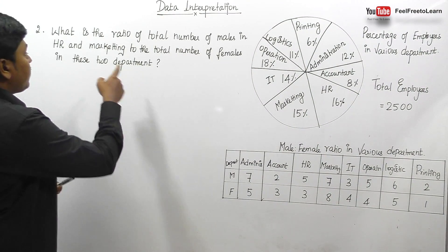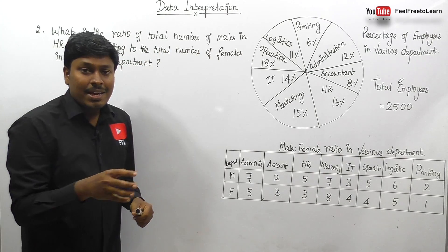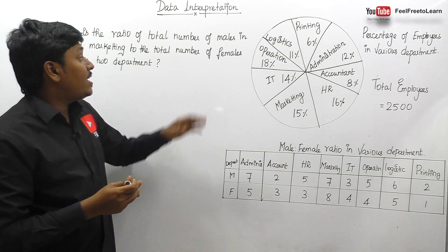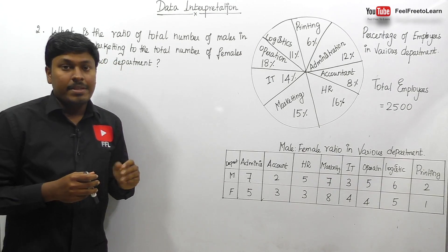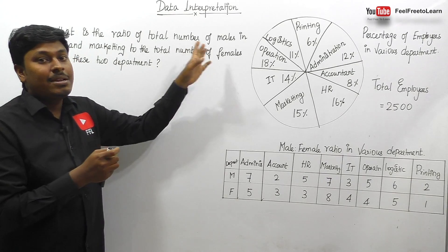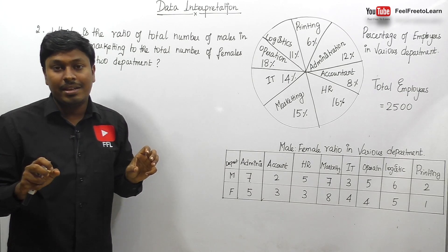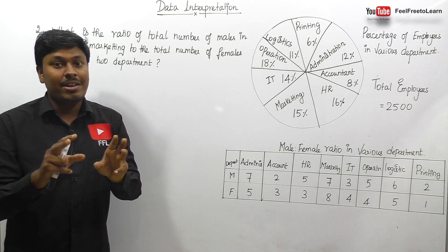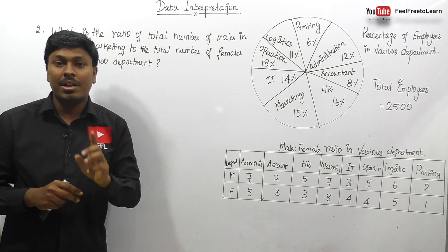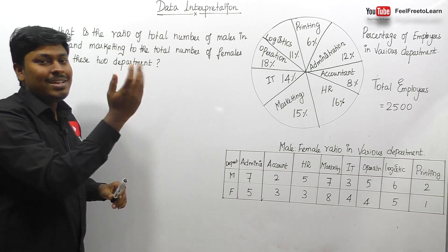Question number two: what is the ratio of the total number of males in HR and Marketing to the total number of females in those two departments? My advice: don't calculate the number of males in HR separately, then males in Marketing separately, and then try to find the ratio. If you follow that normal procedure it will take nearly two and a half minutes. Always write all values in a single step so you can easily cancel them.